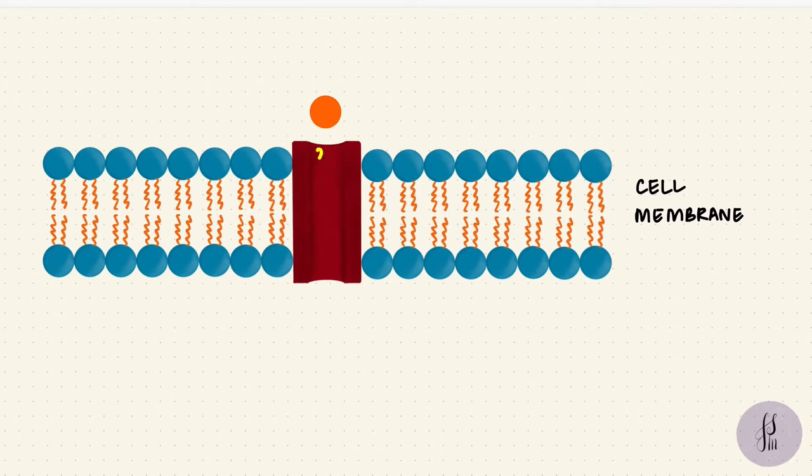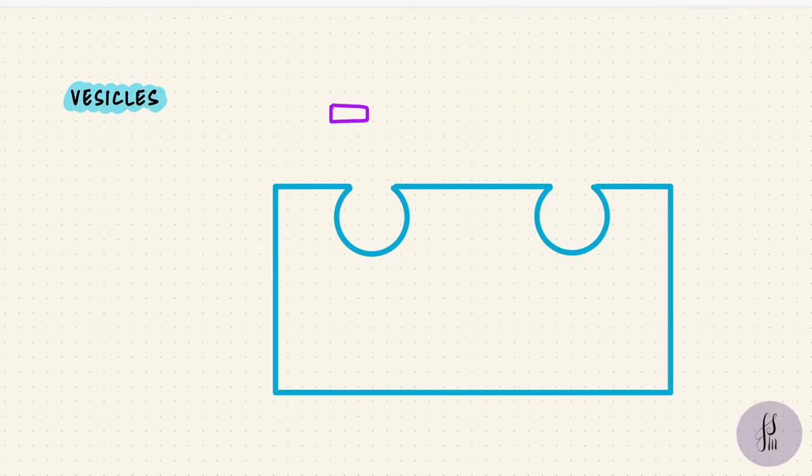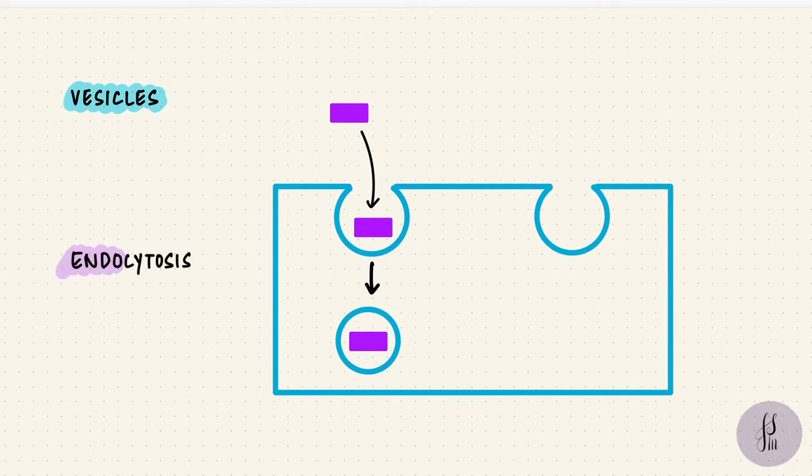Small things like ions can use protein channels and diffuse. But what about macromolecules? They need another way, and that's by using vesicles. These vesicles pinch off the membrane. If they're going to bring things into the cell, the process is endocytosis because endo is internal.